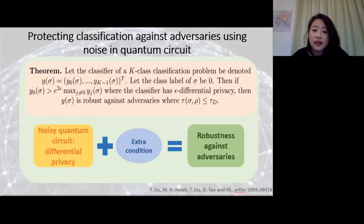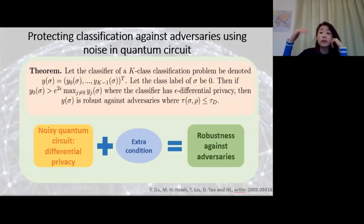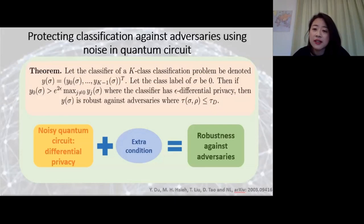Our theorem says in the infinite sampling limit it doesn't change your classification, but we can easily maintain accuracy by simply increasing sample complexity—and we saw what sample complexity we need for that. So now comes the question: all these are quantum results. How do they compare with classical results? What advantages might they have compared to classical? Let's look at a particular example of a noisy classical device where we use the same kind of mechanism.